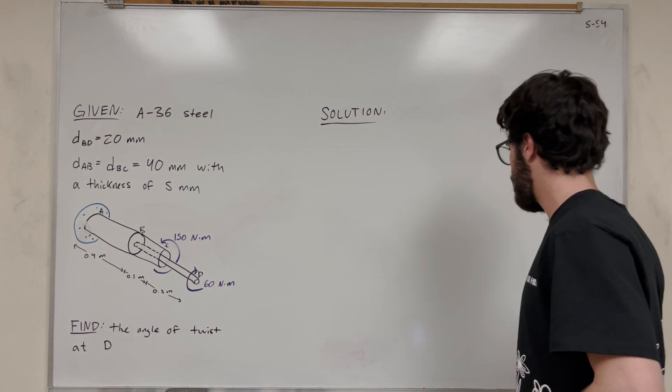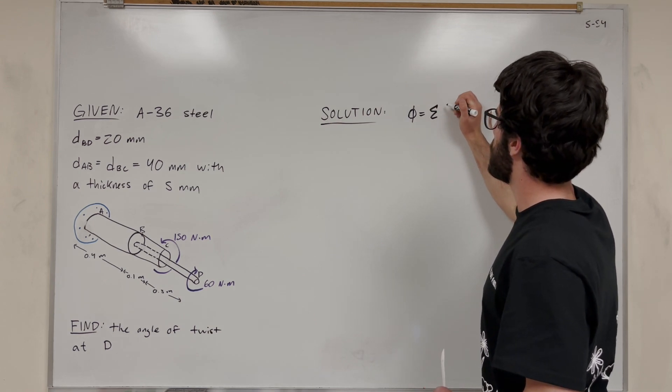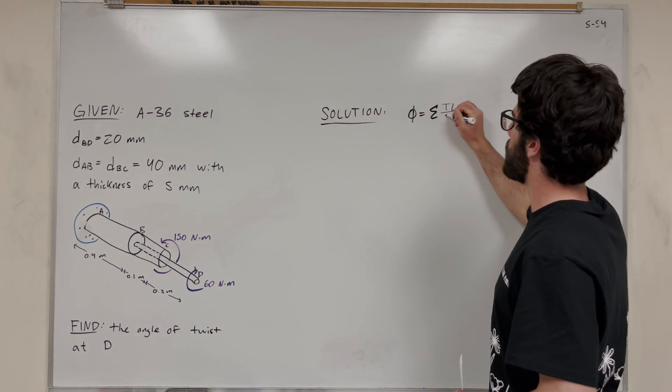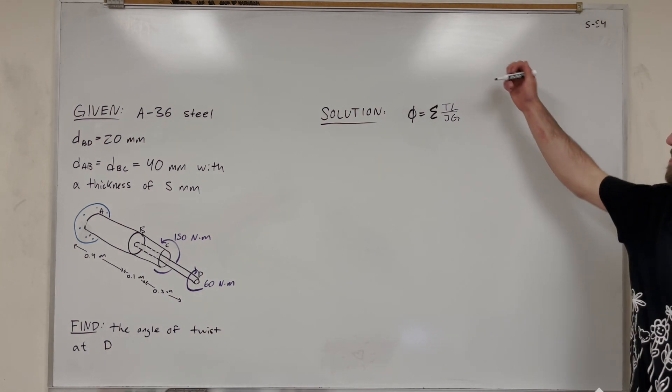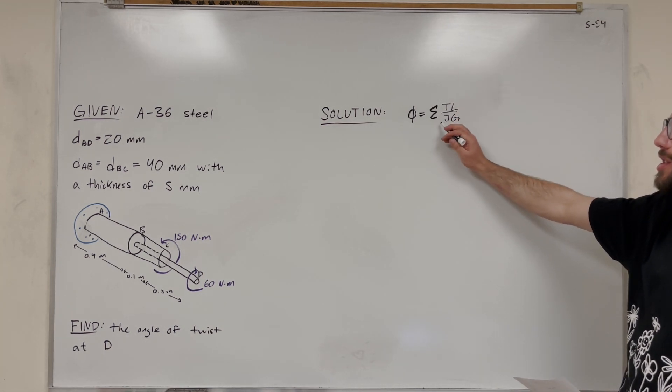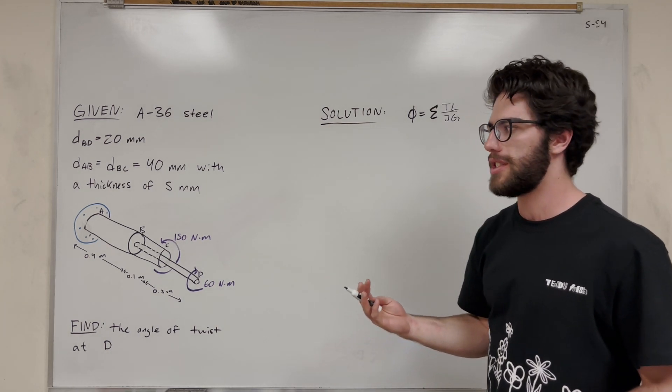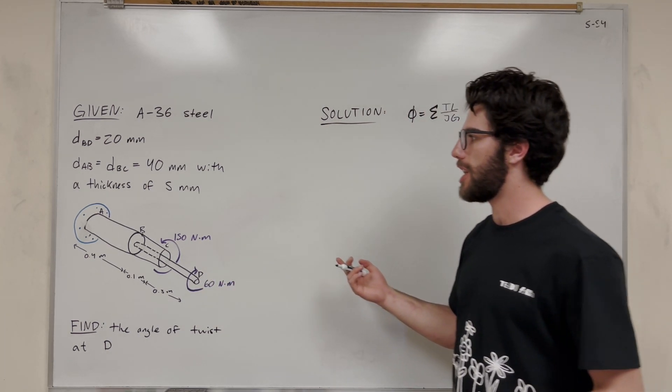So the angle of twist formula, what's that going to be? Angle of twist is equal to the sum of T L over J G. So let's look through each one of these. The sum means that we're going to add up all the sections that are contributing to the angle of twist of D. So what are those sections going to be?